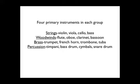The strings have the violin, viola, cello, and bass. The woodwinds have the flute, oboe, clarinet, and bassoon. Brass has trumpet, French horn, trombone, and tuba. And the percussion — it could be a pretty long list, but these are some of the typical percussion that you might see: timpani, bass drum, cymbals, and snare drum.